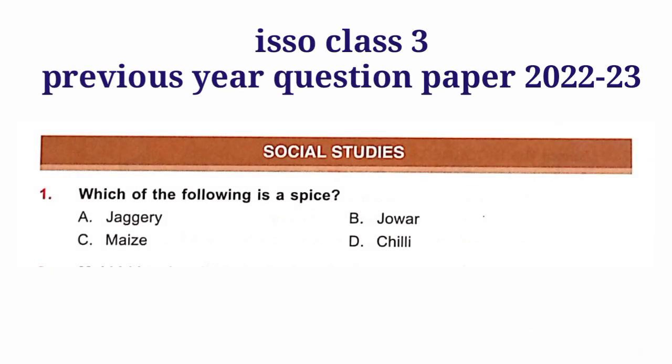Let us discuss the questions. Question No. 1: Which of the following is a spice? Option D is correct — chilli is a spice. Jowar and maize are cereals. Jaggery is unrefined sugar, obtained from sugarcane or date palms.